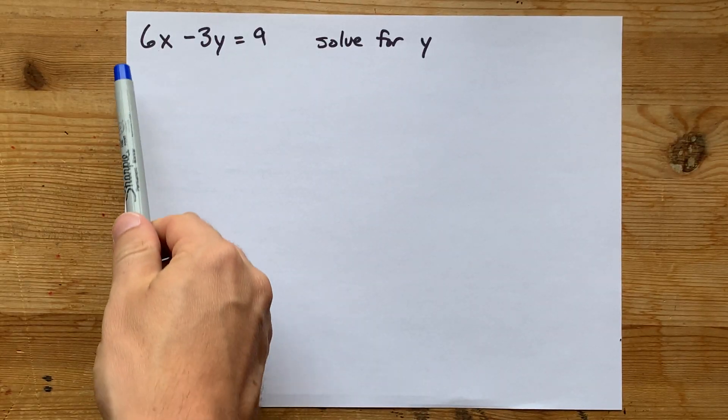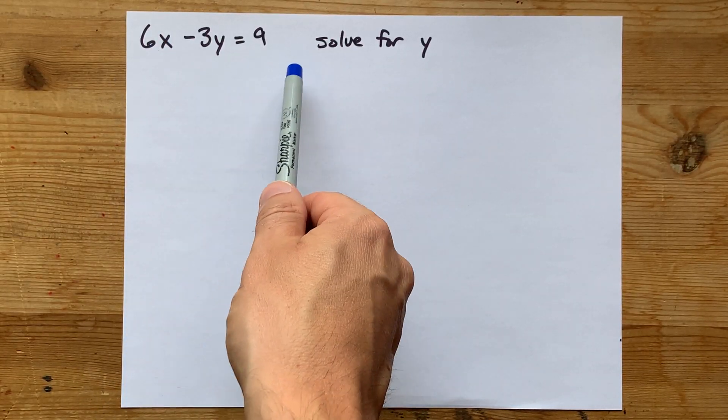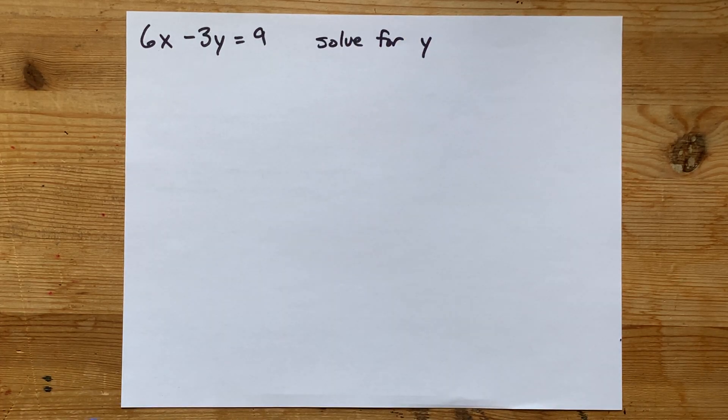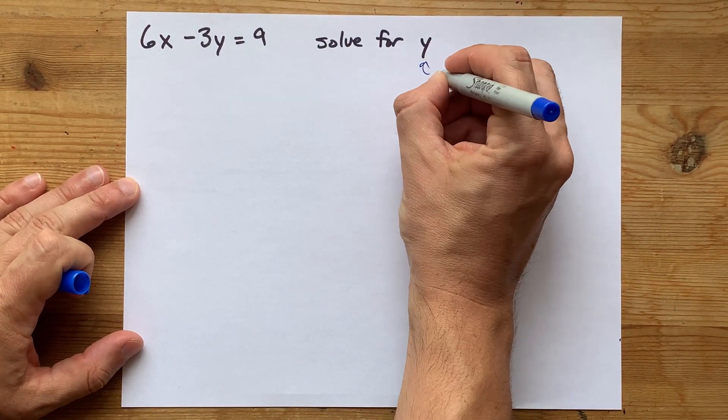This question that I found online, 6x minus 3y equals 9, solve for y, basically is asking you to get y alone.